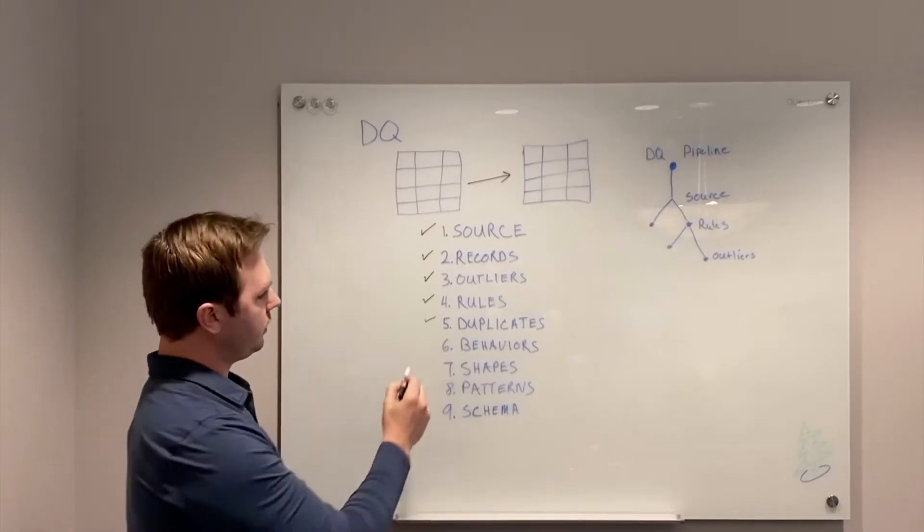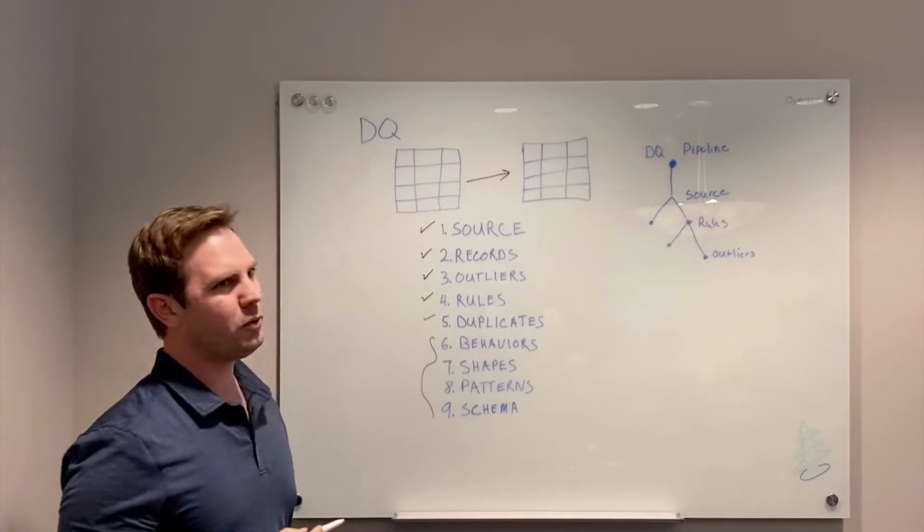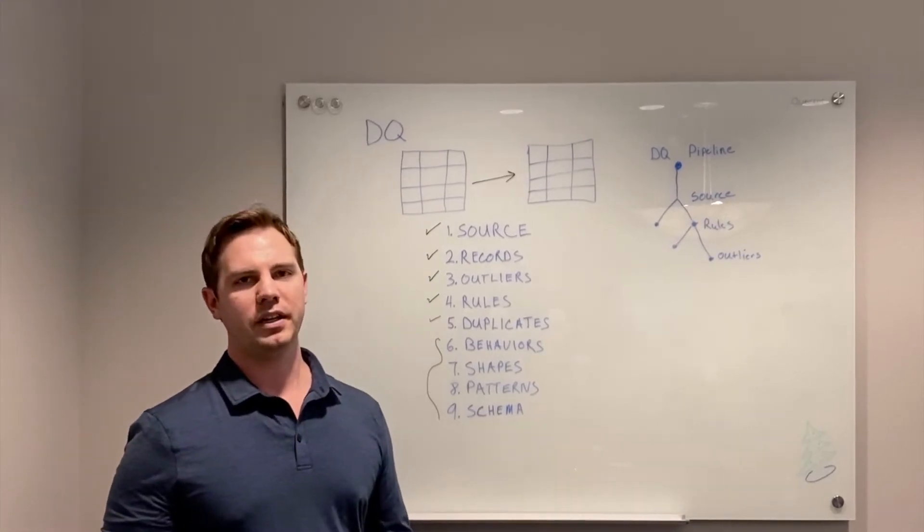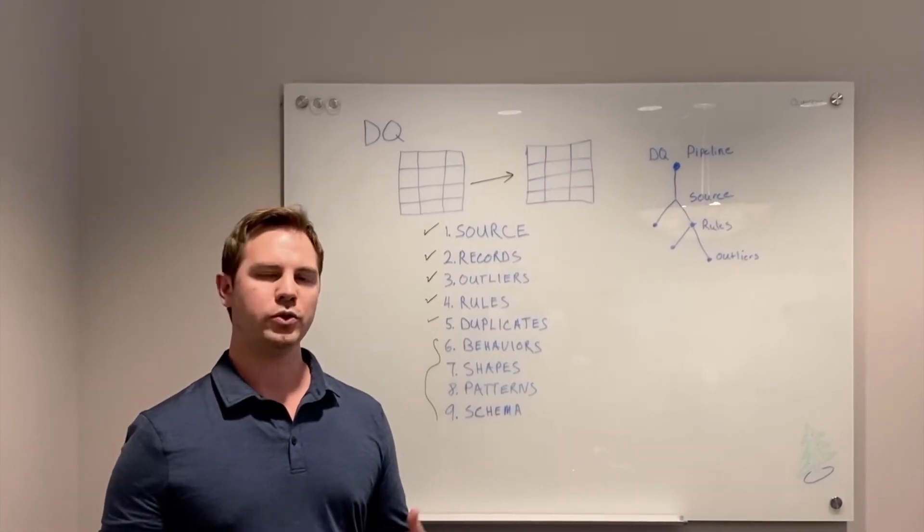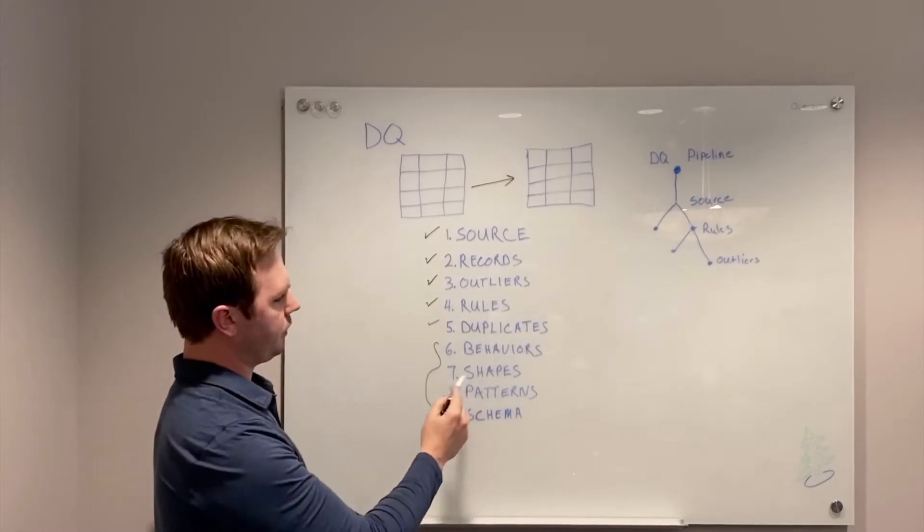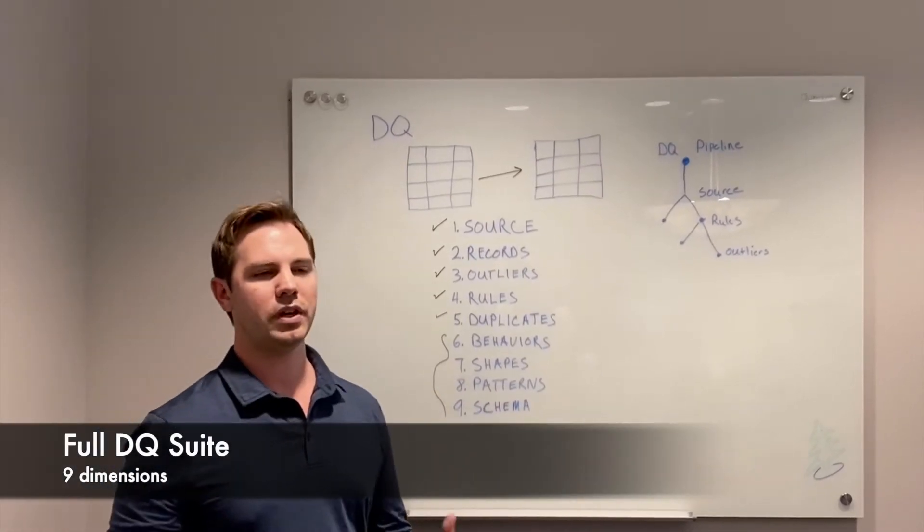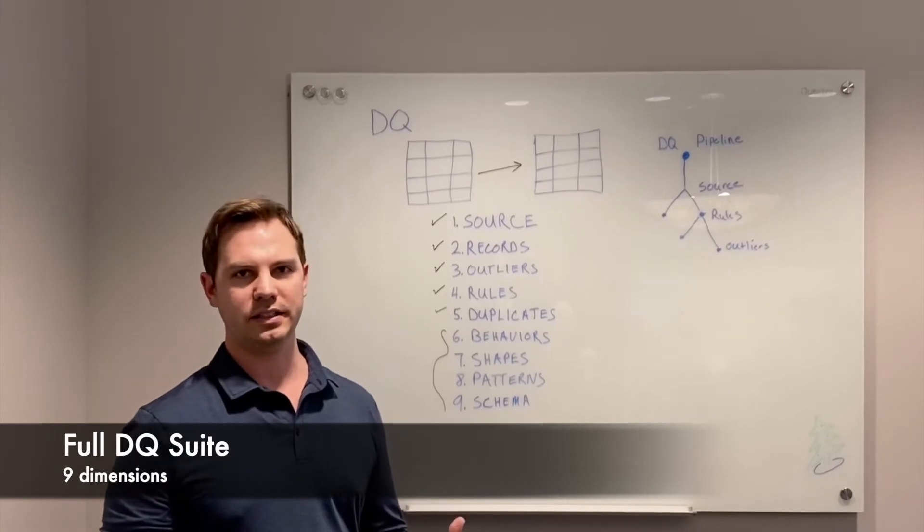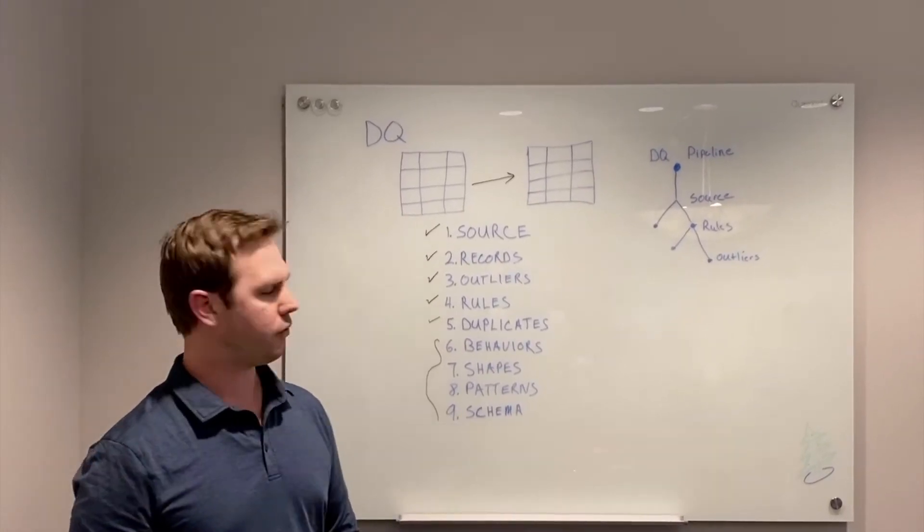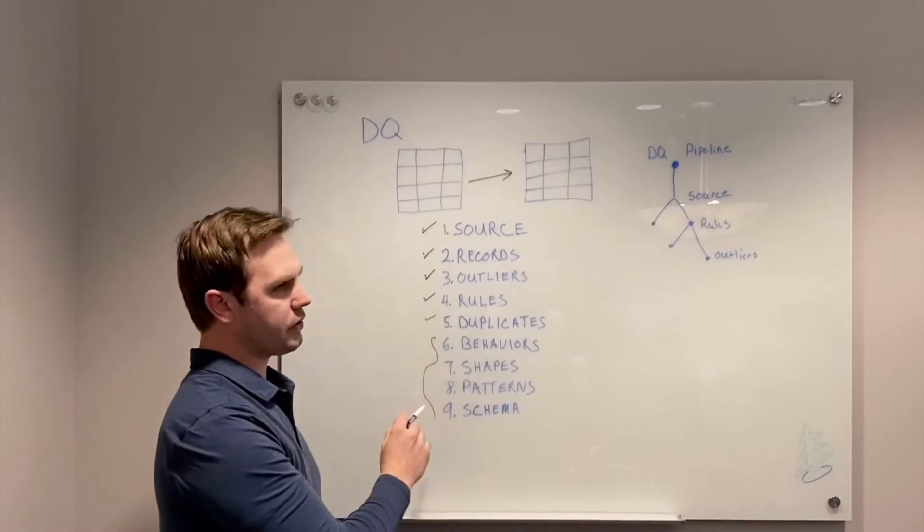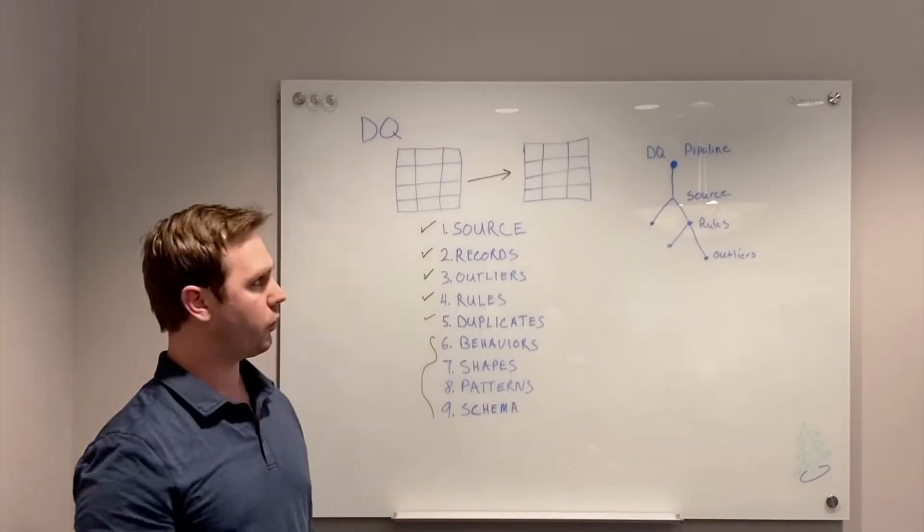But the thing that's really the biggest section of data quality is people are wondering how could I observe data and just tell me when it's wrong and use automatic behavioral analytics and things like shapes and patterns and schema evolution so that these features don't have to be turned on but they're constantly listening and can be activated to alert you automatically. So that's a huge area for us that's sort of on the forefront of data quality.